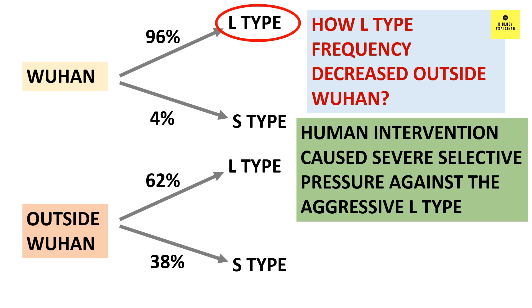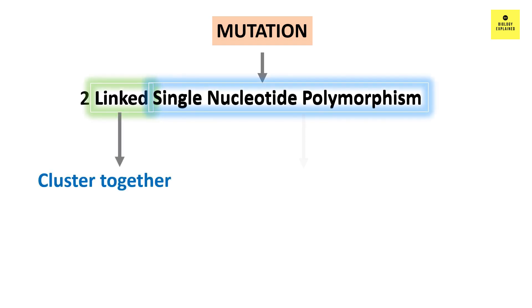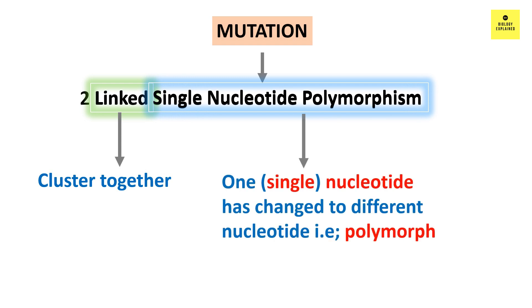Thus, the two types faced different selective pressures. It is noteworthy to mention that people can be infected with both L-type and S-type SARS-CoV-2. The mutation occurred in two linked single nucleotide polymorphisms. By linked, it means they always cluster together. By single nucleotide polymorphism, we mean one nucleotide has a different form — that is, it is polymorphic.